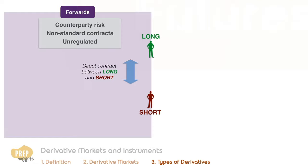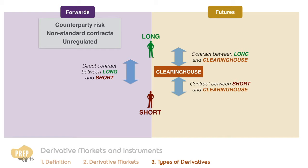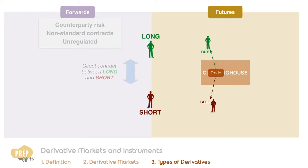In contrast, futures are exchange-traded contracts in which the agreement is with the clearing house. The clearing house does this by splitting each trade, acting as the opposite side of each position. It acts as the buyer to every seller and the seller to every buyer. This system allows either side of the trade to reverse positions at a future date without having to contact the other side of the initial trade. Traders will be able to reverse or reduce their position with ease.